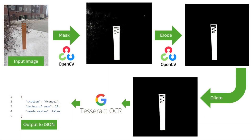Our project works by using the OpenCV library with Tesseract optical character recognition. The first step is to crop the image down to just the observable snow stake, without any additional interference from greenery, fences, or any other structures.